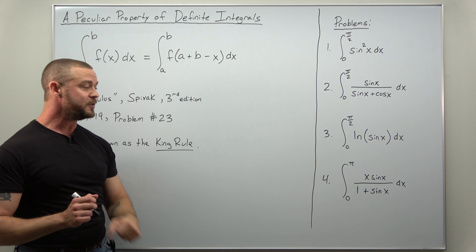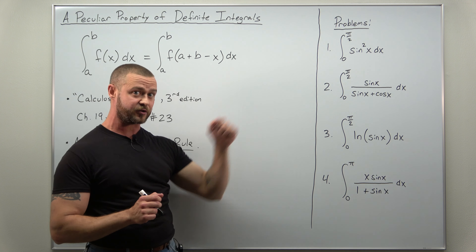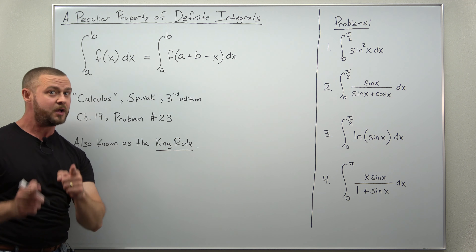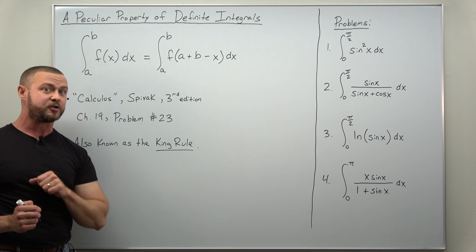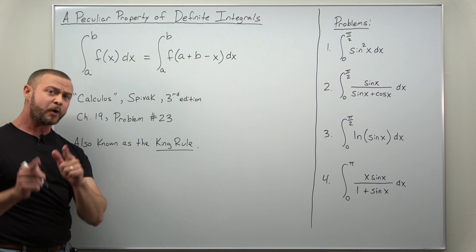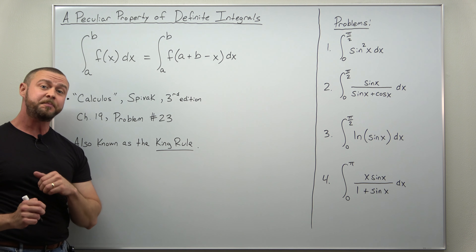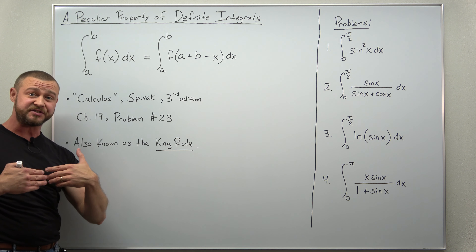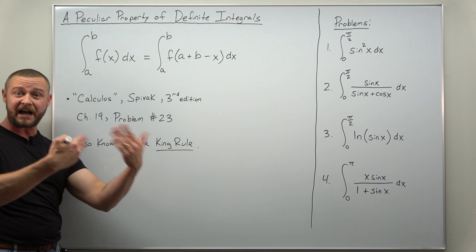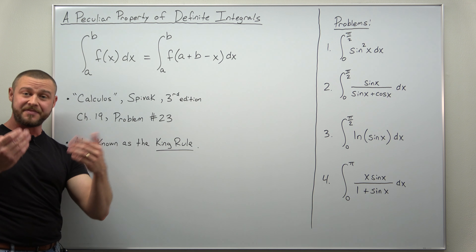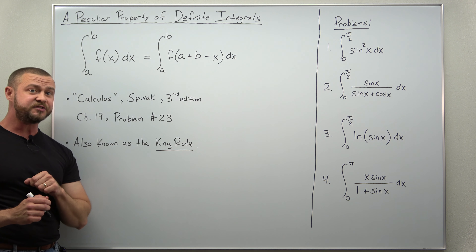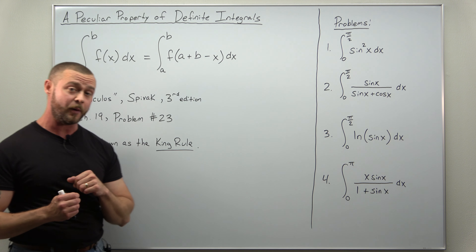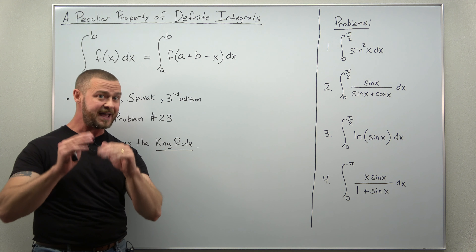That inside substitution is what makes all the difference in easily evaluating some of these integrals. Just by looking at it, it doesn't seem obviously true, but we're going to see that geometrically in a moment. One place I encountered this is in one of my favorite calculus books by Spivak, where it's stated as a simple problem asking you to prove it using a substitution. Other places online refer to this property as the King Rule, which is what you might know it by.